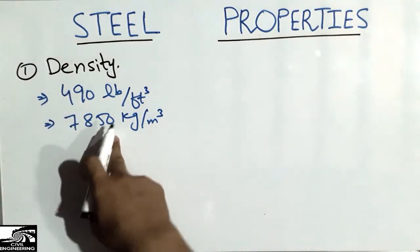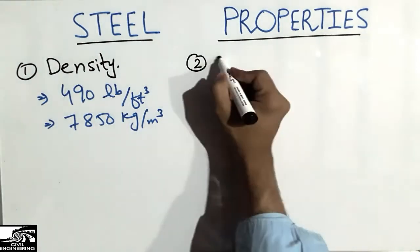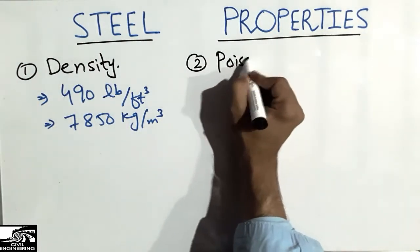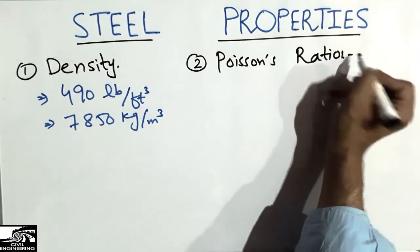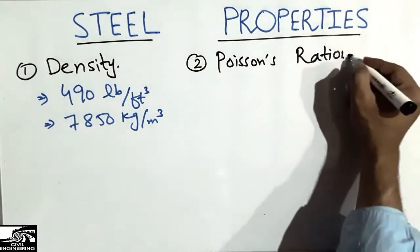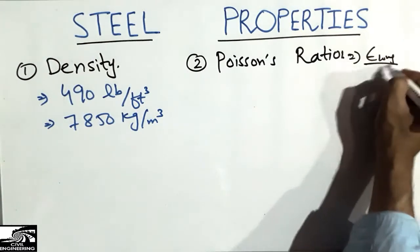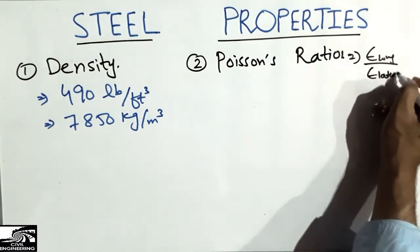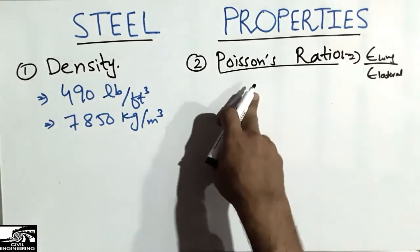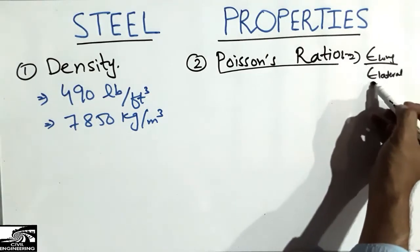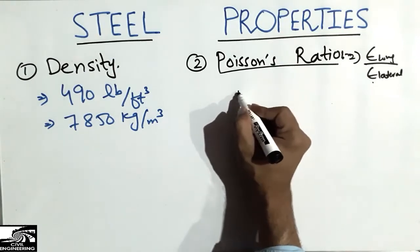The second property of the steel bar is the Poisson's ratio. Poisson's ratio is the ratio of longitudinal strain to lateral strain. I have uploaded a video about Poisson's ratio — you can watch it; the link is in the description.